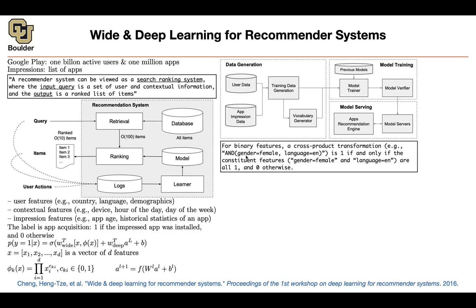You construct a new variable called 'gender-language' with higher dimension — two times three equals six-dimensional. If a particular observation is female and using English, you get one followed by five zeros. If female and using French, it's zero-one followed by four zeros, and so on. This is how you construct the cross-product feature — these are additional variables or additional dimensions, which is why you're concatenating them.